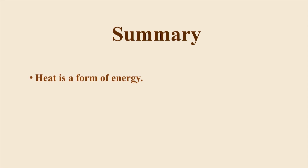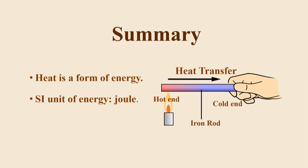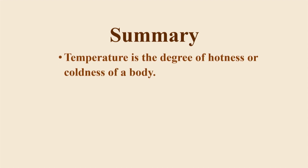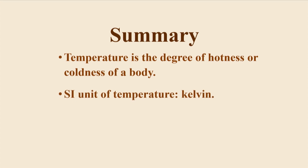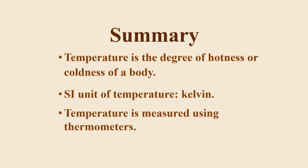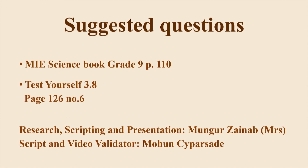Students, we have reached the end of our lesson for today. Let's recapitulate what we have discussed. Heat is a form of energy and its SI unit is the joule. Heat energy always flows from the hot end to the cold end. Temperature is the degree of hotness or coldness of a body, and its SI unit is the Kelvin. Temperature is measured using thermometers. Here are some exercises that you can attempt from your textbook. Thank you and see you soon for another lesson.